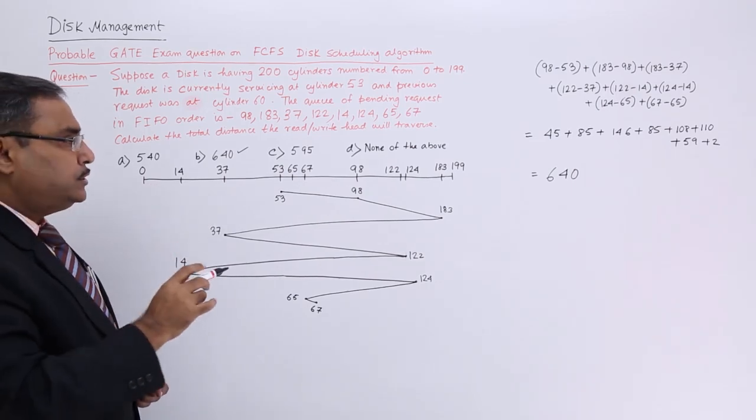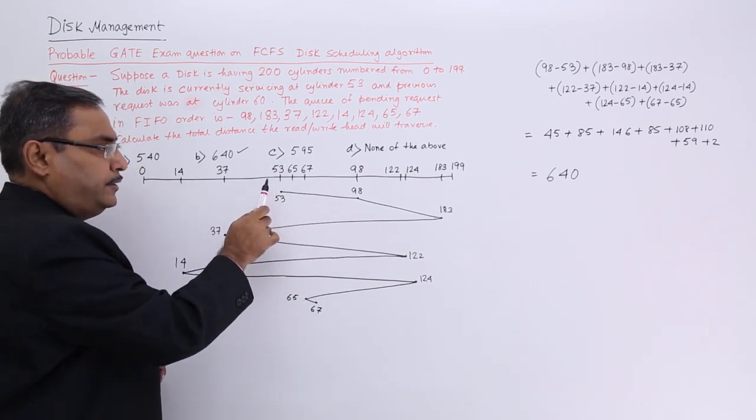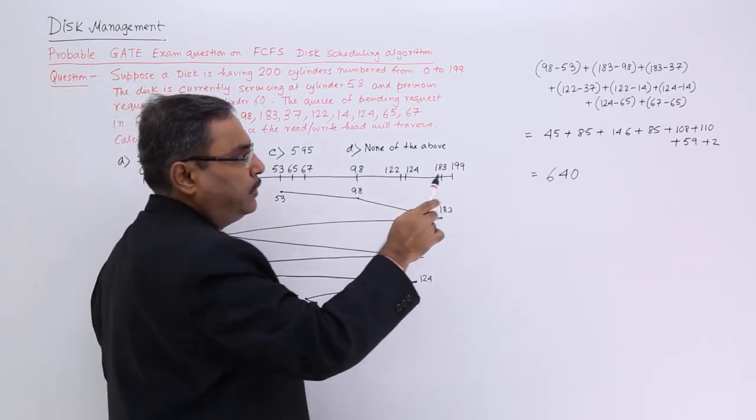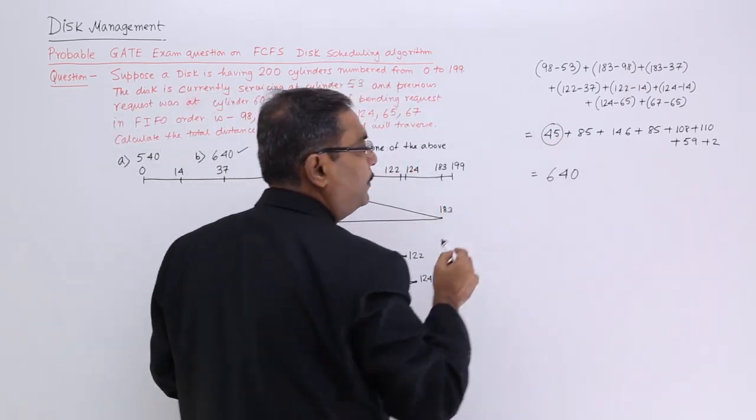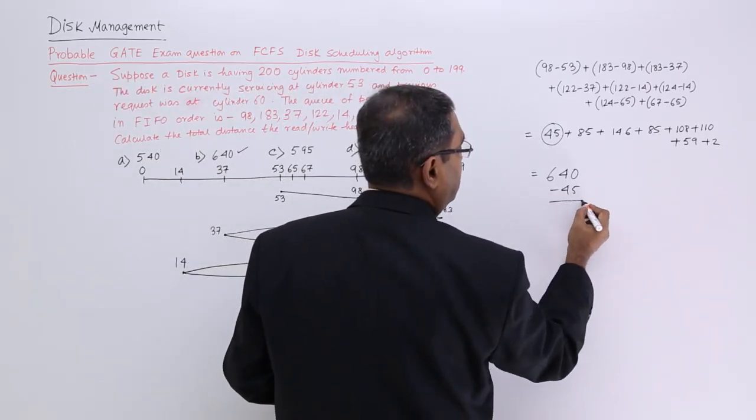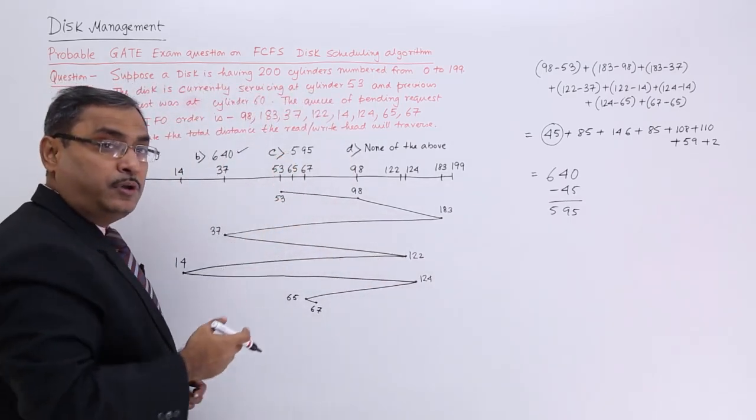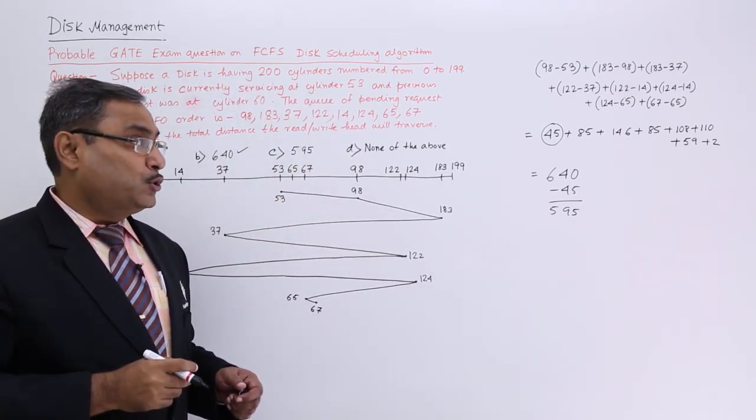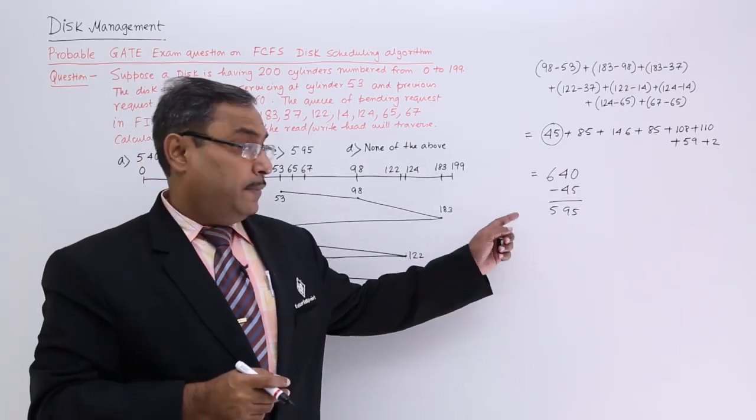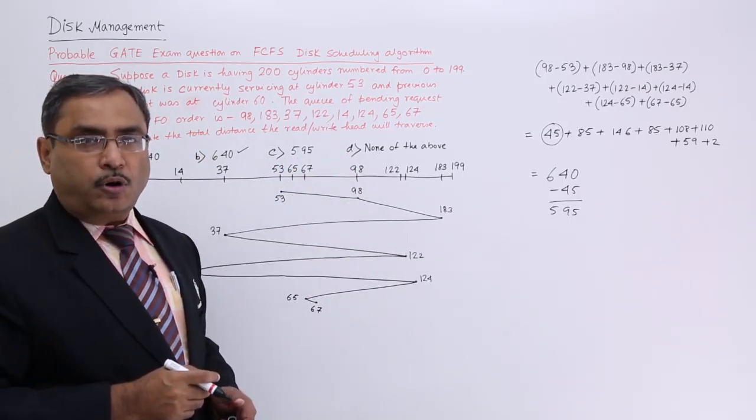But another thing you should notice, if you forget to take this one, that means initially my read-write head was at 53. If you forget to take this one, then how much you are omitting? You are omitting 45. So if you subtract 45 from here, then what will be the answer? 595. You see, 595 is one of the options. So it is not possible always for the cross check. If the answer is not there, that means my computation was wrong. But in that case, this option is also there. So be cautious while solving this particular problem.